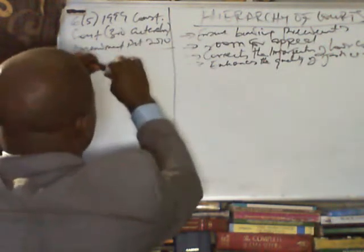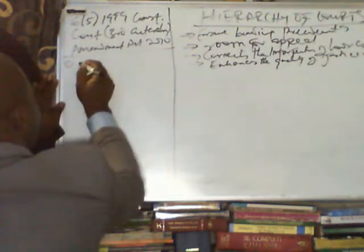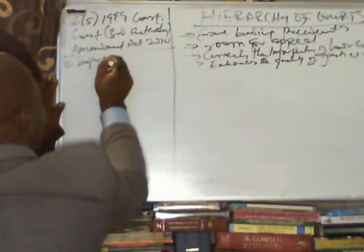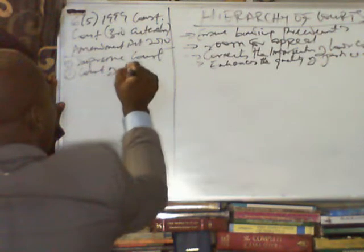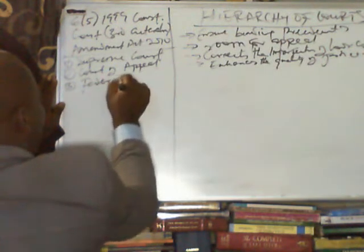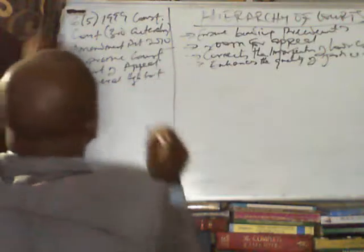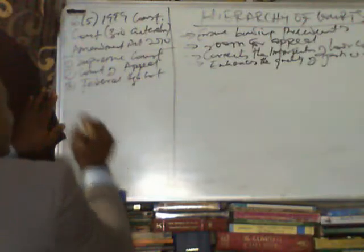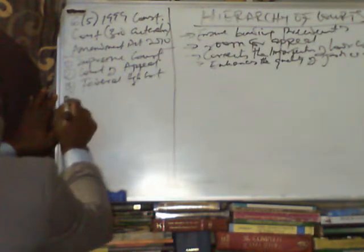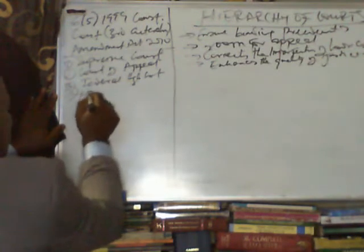If you read these two documents, you will find that the list goes as follows: at the top you have the Supreme Court of Nigeria, followed immediately by the Court of Appeal, then the Federal High Court. Reading the 1999 Constitution alone, the next court would be the High Court of the Federal Capital Territory. But where you read the Third Alteration Amendment Act of 2010, it tells you that after that section there should be a new section containing the National Industrial Court.